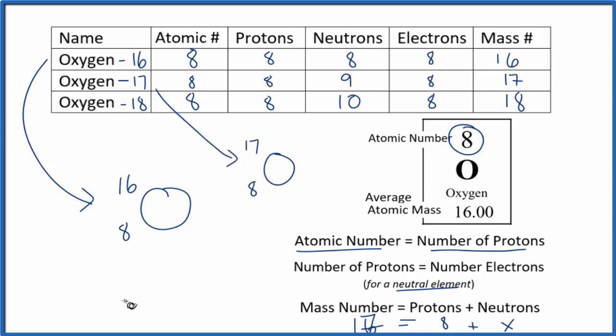And then oxygen-18, let's put it down here, we would say 18 for the mass number, and again, oxygen is always going to have an atomic number of 8. So these are three isotopes of oxygen.